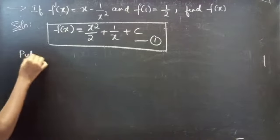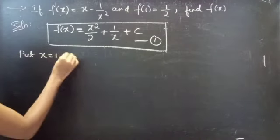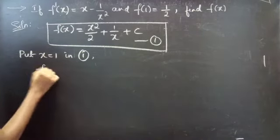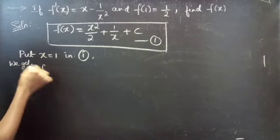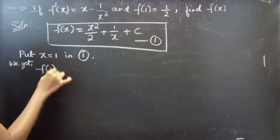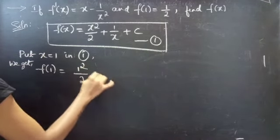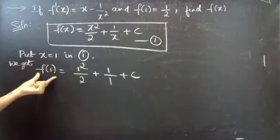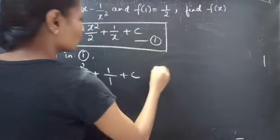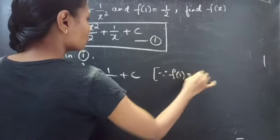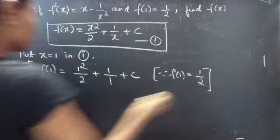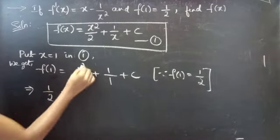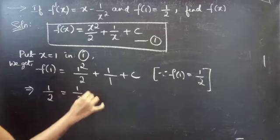Put x equals 1 in equation 1. We get f(1) equals 1 squared by 2 plus 1 by 1 plus c. Since f(1) equals 1 by 2, we replace f(1) with 1 by 2, giving 1 by 2 equals 1 by 2 plus 1 plus c.